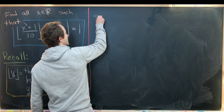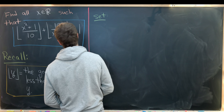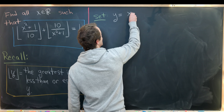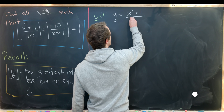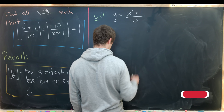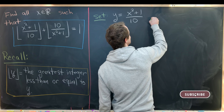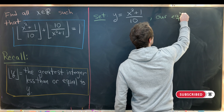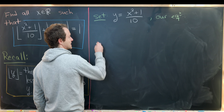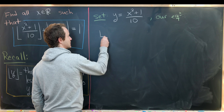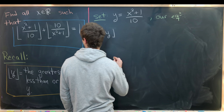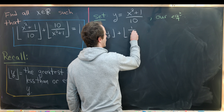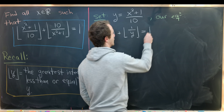In our case, I'm going to set the new variable y equal to (x squared plus 1) over 10. Our equation then becomes the following simpler form: the floor of y plus the floor of 1 over y equals 1.